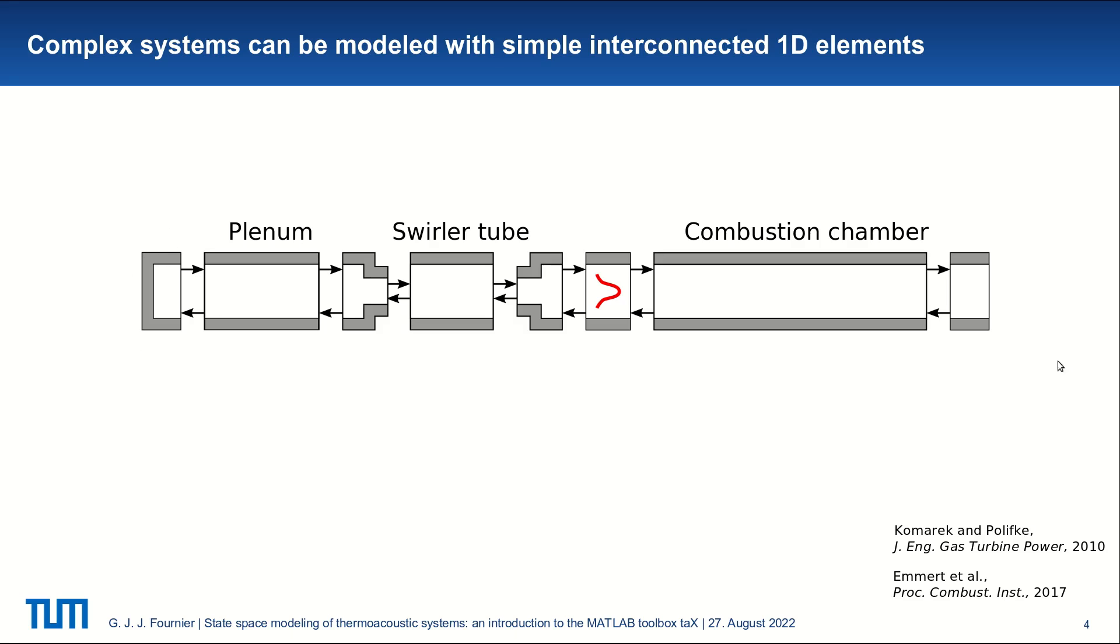So we have boundaries at the inlet and outlet. We have ducts where we consider that the acoustics is the most important phenomenon in this problem. And the plenum and the combustion chamber are simply modeled as ducts where only 1D plane waves propagate. Then we have also compact elements like the area changes and the flame, for example.